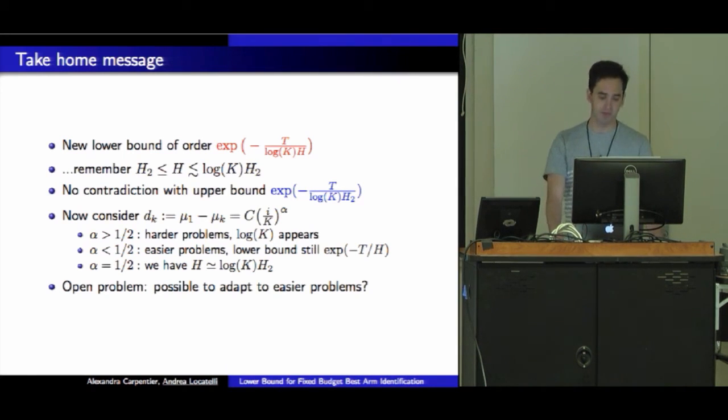Now some food for thought. Consider instead a parameterization with alpha like that. Before I had alpha equal 1. What we show is there are harder problems in which the log K appears, and easier problems in which we have exponential minus t over H. We have no reason to think the lower bound should be improved. This calls for an interesting problem: can we adapt somehow to easier problems?